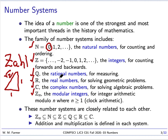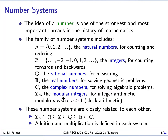So we have these different families of number systems, and there are other number systems useful in computing as well, but these are the most common ones. Notice that we have a set of inclusions: the modular integers are always a subset of the natural numbers, which are a subset of the integers, which are a subset of the rationals, which are a subset of the reals, which are a subset of the complex numbers. And complex numbers are a subset of the quaternions, quaternions a subset of the octonions. All these number systems are notable because they have an addition and a multiplication.